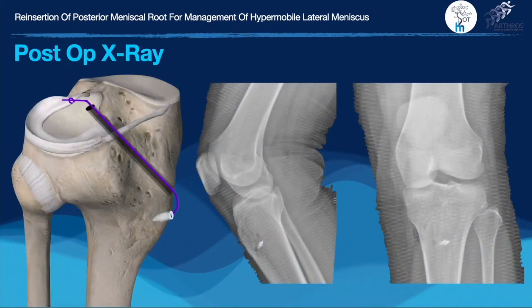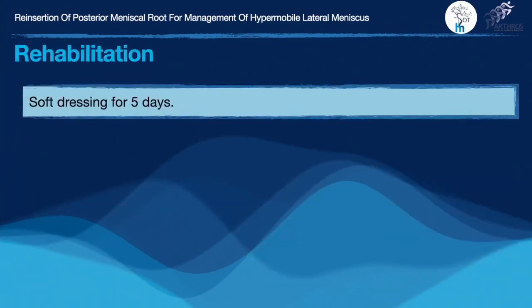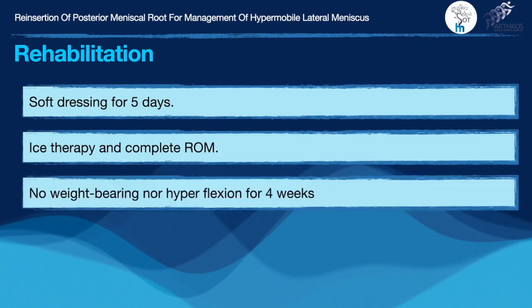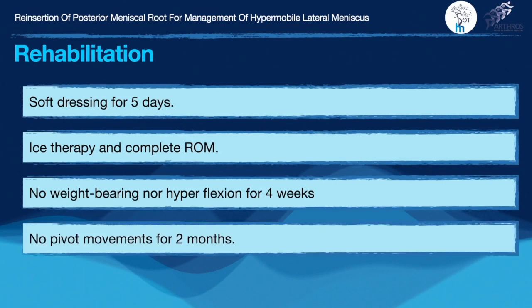Post-operative imaging is used to confirm the position of the implant and the bone tunnel. In rehabilitation, we keep a soft dressing for 5 days, ice therapy and complete range of motion. No weight bearing nor hyperflexion for 4 weeks, and no pivot movement for 2 months.